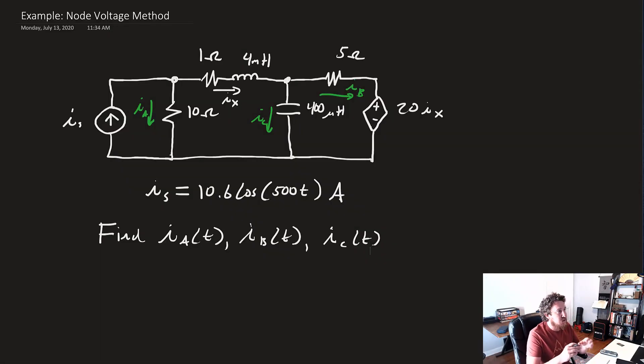In this example, we're going to see how to use the node voltage method with phasers. As you'll see, it's exactly the same as how you did it in your Circuits 1 class.